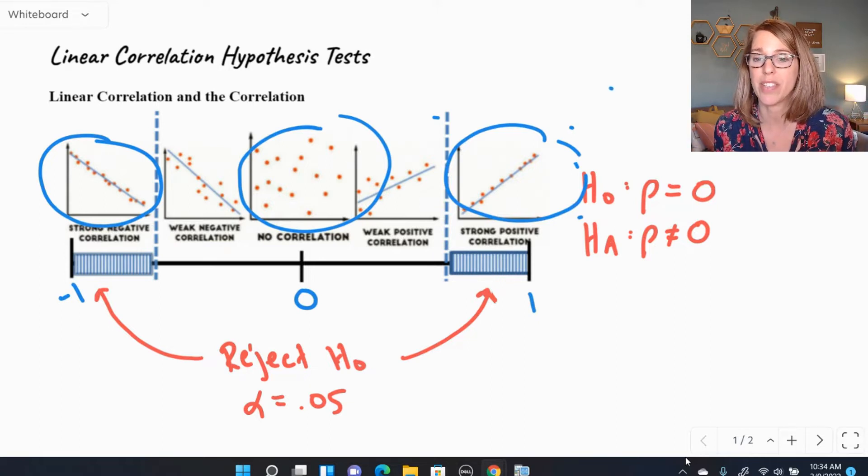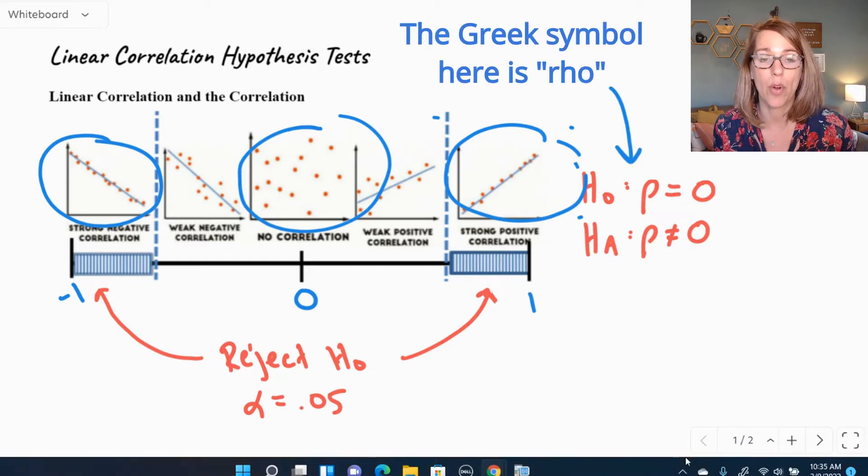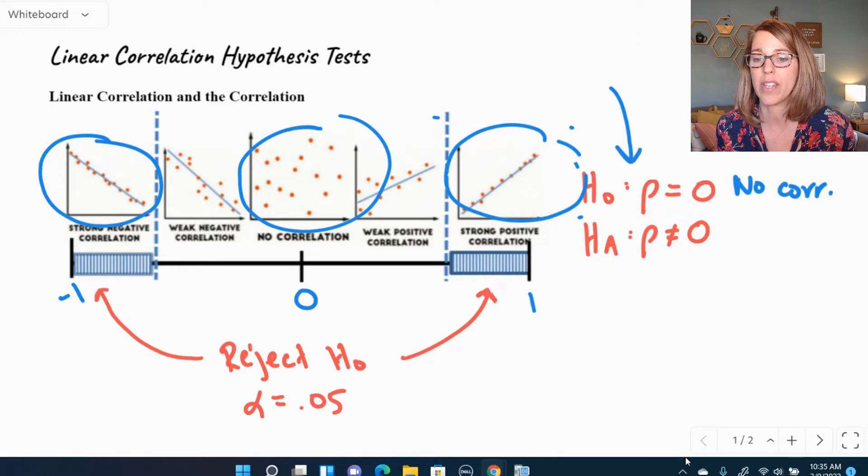We're going to use these hypotheses here to conduct our hypothesis test. If rho, which represents our correlation coefficient, is close to zero, we say that there is no correlation. This is our null hypothesis. If rho is not equal to zero, so significantly so, we say that there is a significant linear correlation.